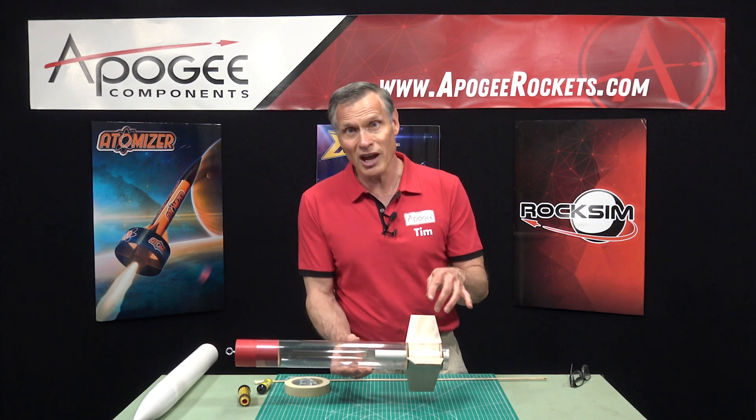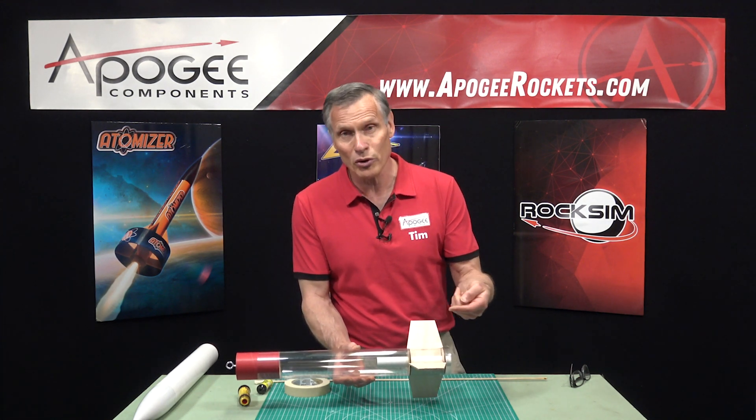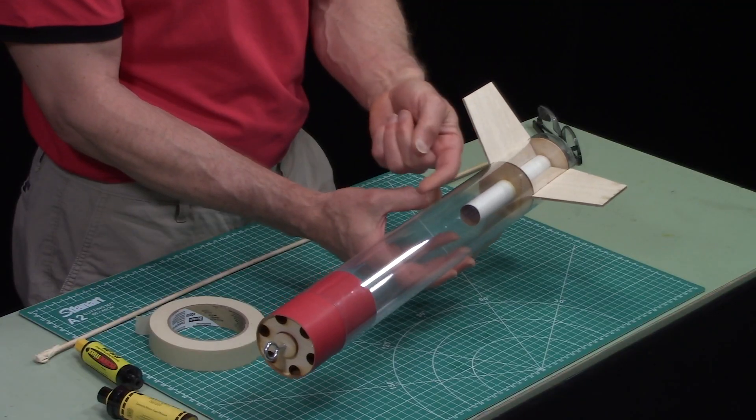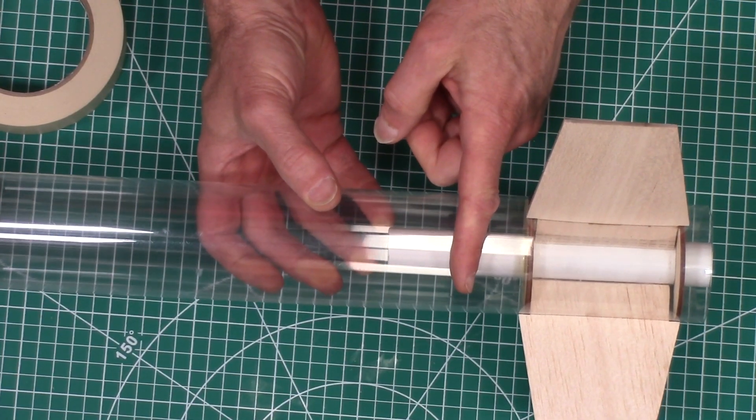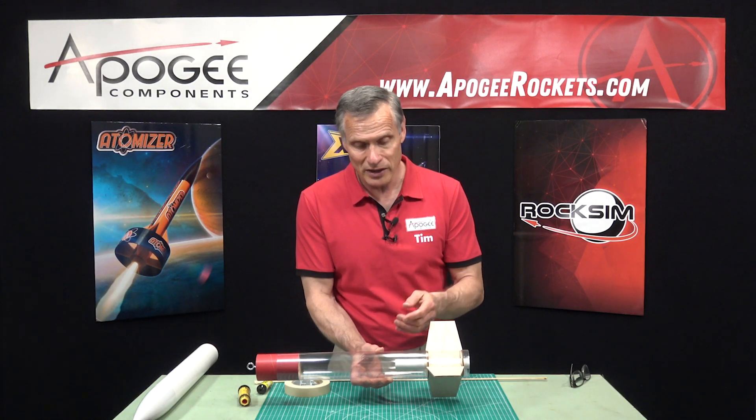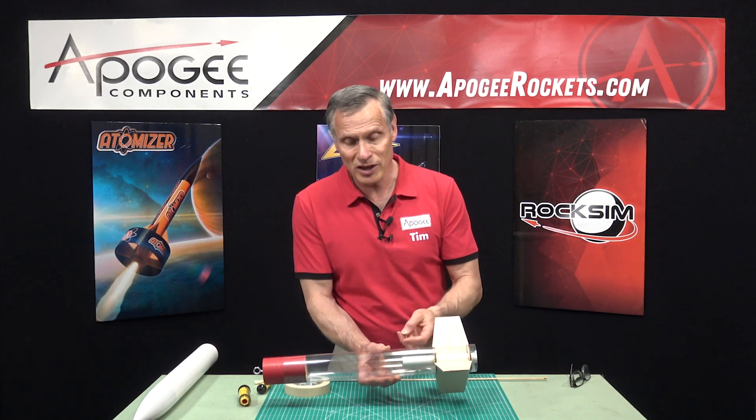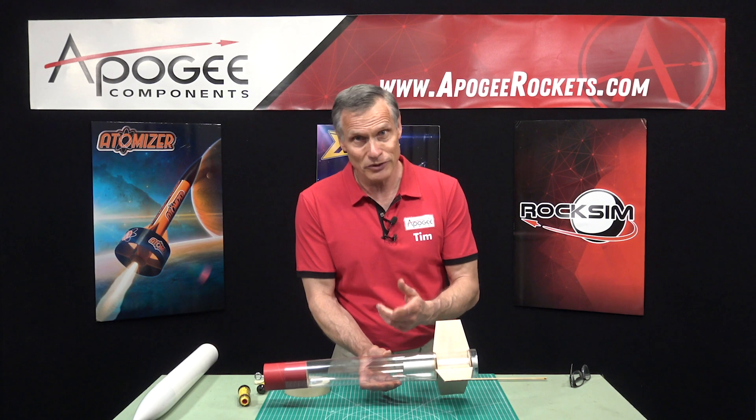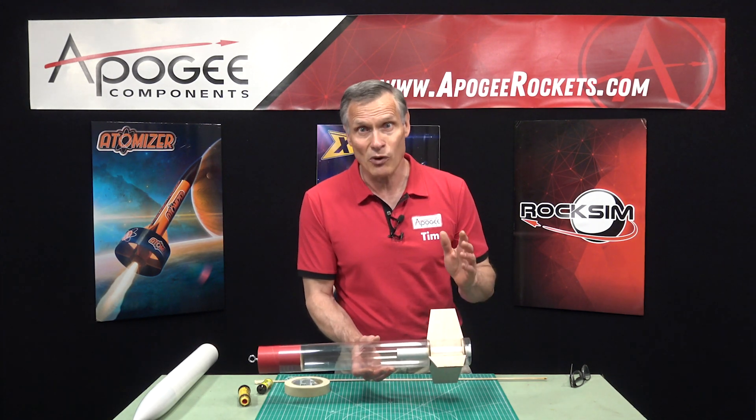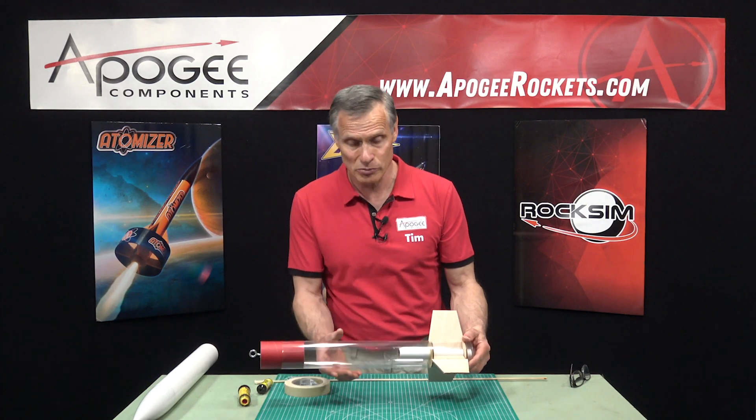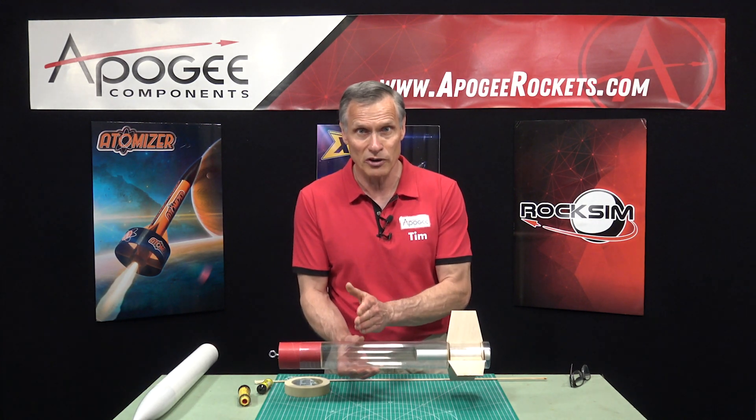So then if you have a longer motor that longer motor is going to stick up and protrude past the end of the motor mount tube which is totally fine. It can protrude out all the way up to here if you want it to. And there are some rockets with really long motor tubes that will stick up pretty far inside.